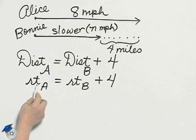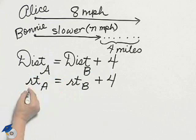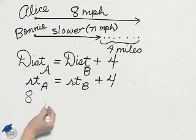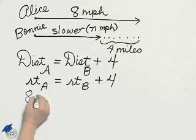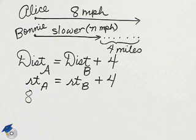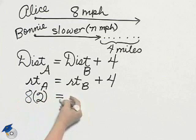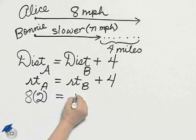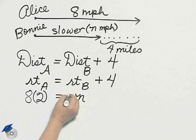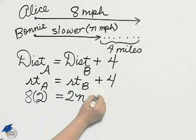Distance is rate times time, so the rate of Alice is 8. The rate of Bonnie is unknown, that's our N, but her time is still 2 hours.